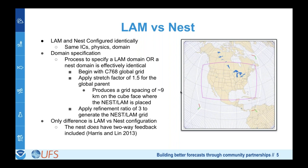We use the same physics for each, with the exception that the global model runs with parameterized convection while the nest does not. The key difference is that the limited area configuration gets boundary conditions from GFS at three-hour intervals, which is somewhat temporally coarse, versus the nest which gets boundaries updated every parent time step and has two-way feedback.